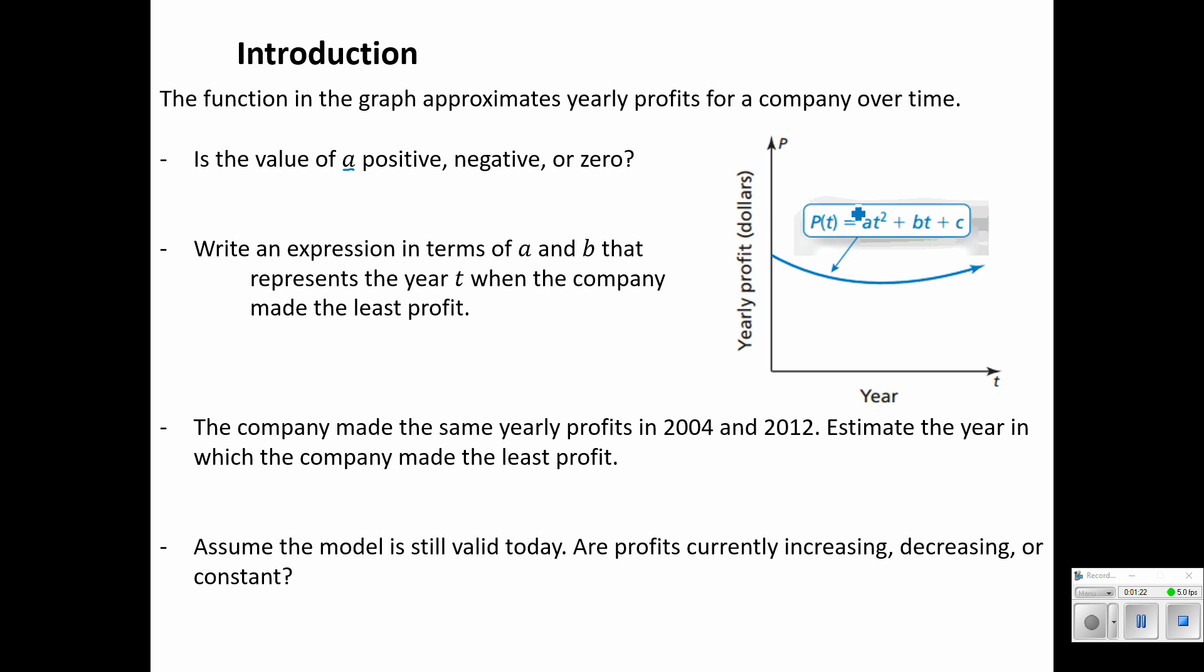Is the value of A positive, negative, or zero? Well, A is our leading coefficient, and we know that if the graph is opening upward, A has to be positive. The next one says, write an expression in terms of A and B that represents the year T when the company made the least profit. So if our yearly profit is on the P-axis here, the lowest point appears to be somewhere around here, and we can see based on our function it is quadratic, so we know that that lowest point is the vertex. We can modify our X equals negative B over 2A to work for T here, and luckily we still have variables A and B, so T equals negative B over 2A is that time.